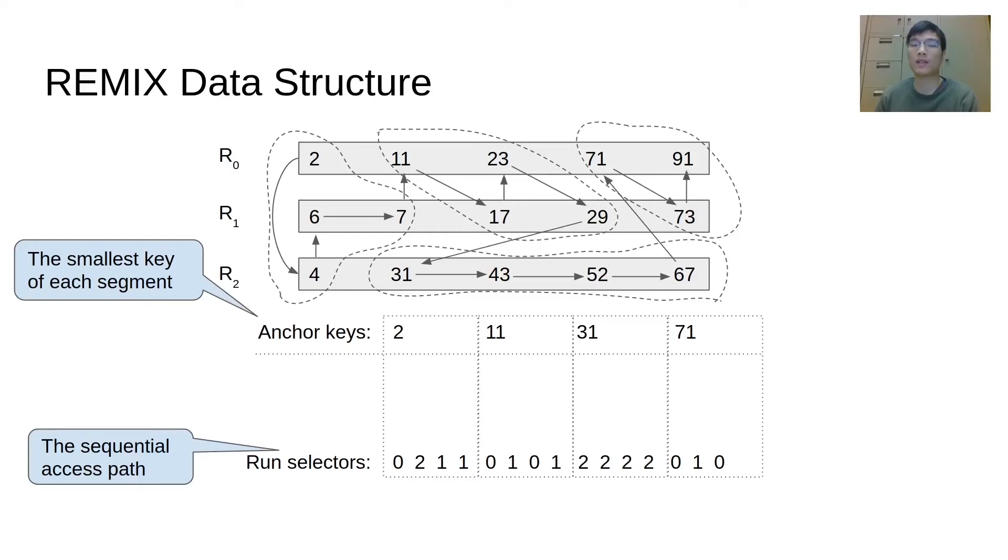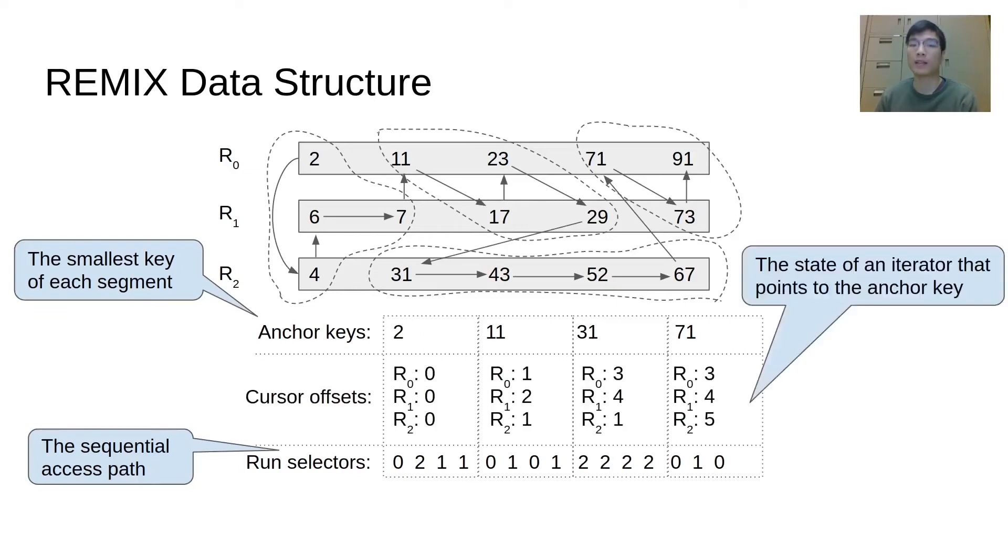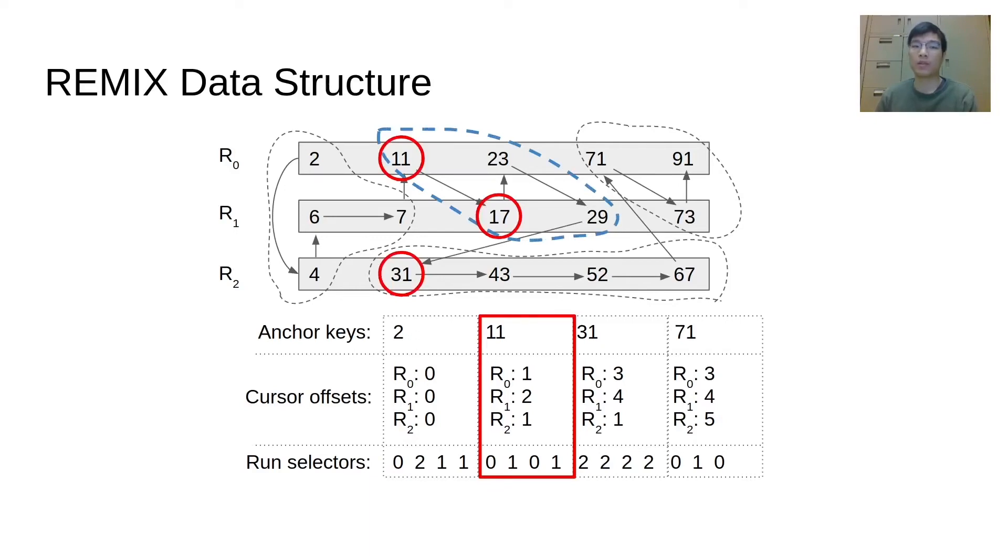To enable scanning from a segment, we also store the cursor offsets for each segment that record the location of the iterators, as if we are going to scan from the anchor key. For example, let's look at the second segment here. The key 11 is the smallest key in this segment, which is also the anchor key. The cursor offsets point to key 11, 17, and 31. They are the smallest keys, greater than or equal to key 11, corresponding to the state of a merging iterator that seeks to key 11.